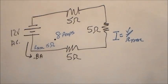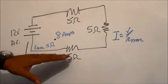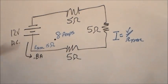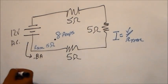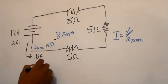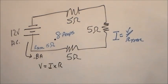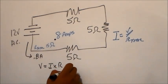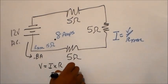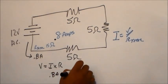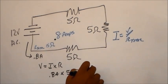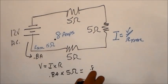As the current passes through each resistor, it's going to drop the total amount of volts. Voltage equals current times resistance. So we have 0.8 amps times 5 ohms, which gives us 4 volts.